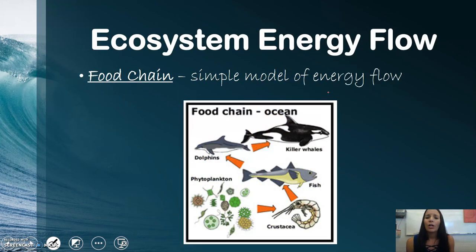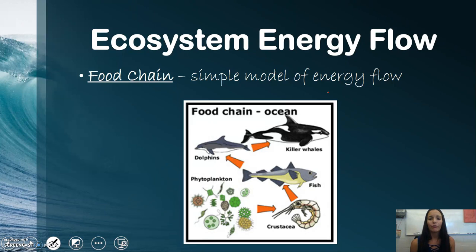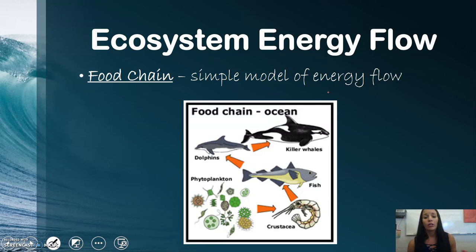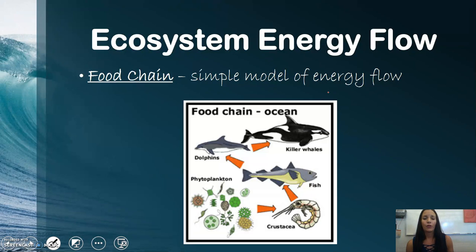Let's talk about energy flow and specifically a food chain. A food chain is a simple model of energy flow from one organism to the next. The arrow always points to whoever is doing the consuming. In this picture, the fish eats the crustacean, so the arrow points to the fish because the fish is getting the energy from the crustacean.